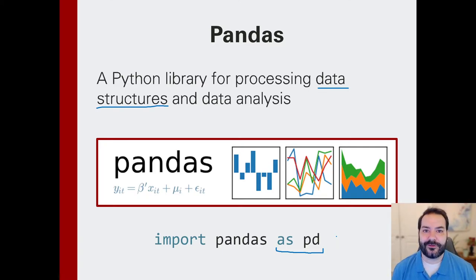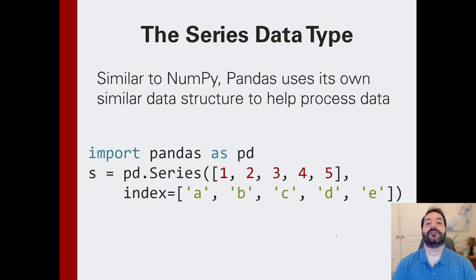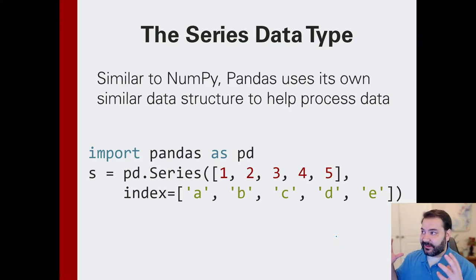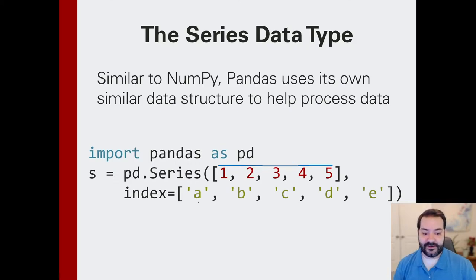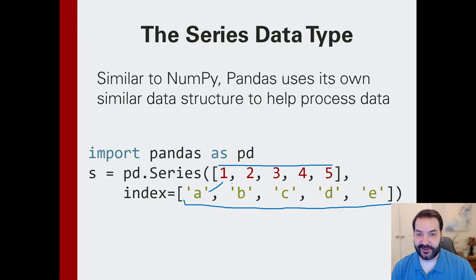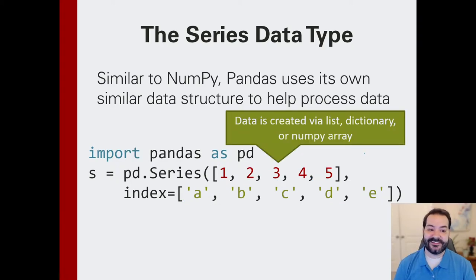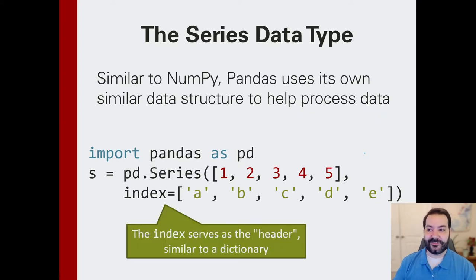Pandas allows us to utilize these data structures. The first one is something known as a series data type, and this is very similar to a dictionary in Python. I have my values — for example 1, 2, 3, 4, 5 — and I want to associate them to some header, or in pandas's world they call it an index. So `a` is associated to 1, `b` to 2, `c` to 3, `d` to 4, `e` to 5.